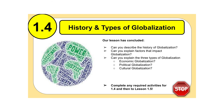This concludes Lesson 1.4, History and Types of Globalization. Can you describe some of the history of globalization? Can you explain factors that impact globalization? And can you explain the three different types — economic, political, and cultural? If you can, pat yourself on the back. Look for any activity attached to Lesson 1.4, complete that, and then move on to Lesson 1.5 when it's ready. Thank you so much for your time and have a wonderful day.